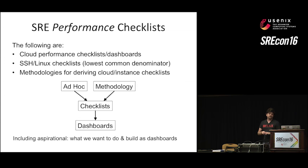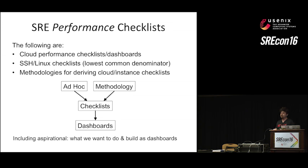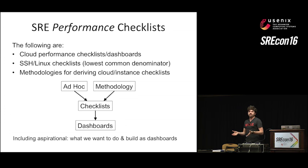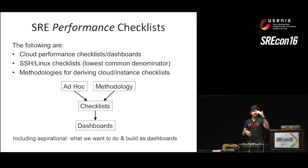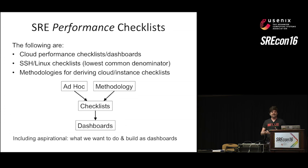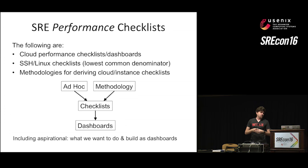The performance checklists I want to go through come from cloud — cloud performance checklists and dashboards — SSH, jumping onto an instance, and also methodologies for deriving checklists. Checklists can be ad hoc based on experiences that typically solve issues, or they can follow a methodology like process of elimination, differential diagnosis, or the USE method. Either works. With performance engineering we love methodologies because they seem elegant. With SRE, it's just about getting the job done — making customers happy as quickly as possible.